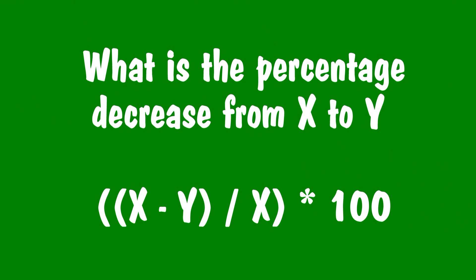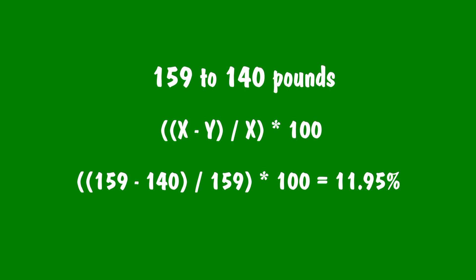So our next lesson here includes the question, what is the percentage decrease from x to y? So for example, you figured out how to lose weight and your weight went from 159 pounds down to 140 pounds. The formula here is x minus y divided by x times 100. So x is 159 and y is 140. So you have to do 159 minus 140 and then divide that by 159 because that's x and then times that by 100 and you'll get your answer of what percentage you lost, which is 11.95%.